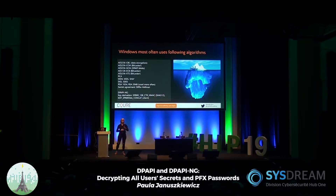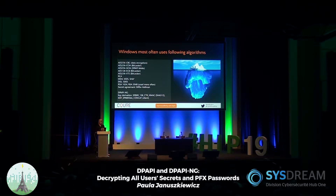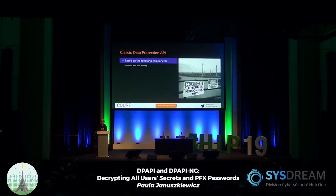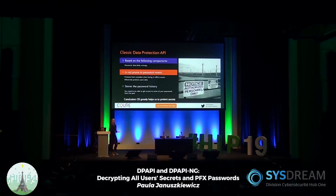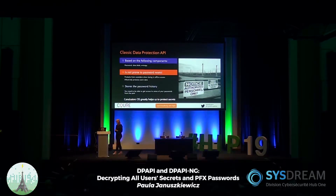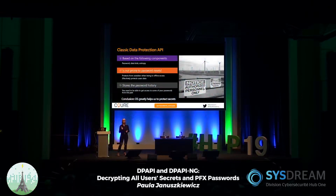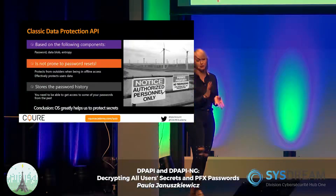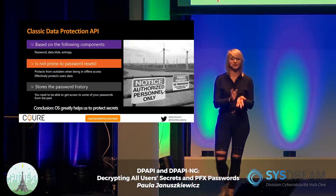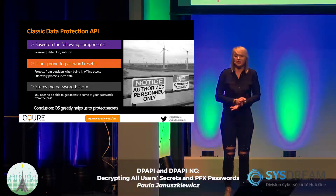Windows uses a specific set of cryptographic algorithms. When you do research around cryptography you can predict what algorithms the developers on the other side might use — that narrows down what you're dealing with. The Data Protection API is a Windows API that allows you to protect data in place whenever you're saving it through various applications or the operating system — for example saving a password in Outlook, in a browser, or protecting private keys.